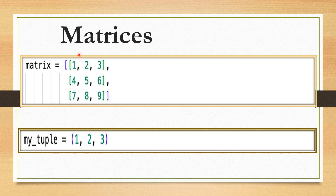The second thing we'll discuss is tuples — an ordered, immutable collection of elements enclosed in parentheses or without enclosing brackets. Tuples are similar to lists but cannot be modified once created, and each element is separated by a comma. For example, my_tuple with three elements 1, 2, and 3.